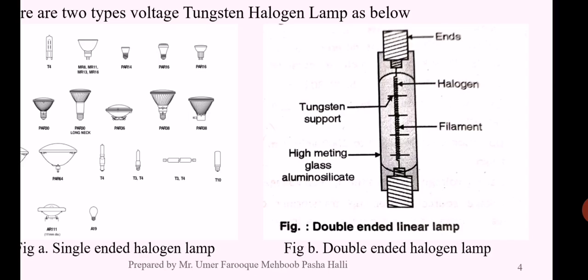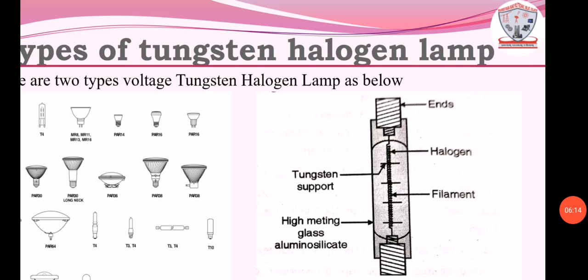The advantages of halogen lamp are: it is available in miniature size, available as single-ended or double-ended lamp, no blackening of lamp, higher lumen output up to 22 to 33 lumens per watt, high operating temperature, and longer life of about 2000 hours approximately. It is available in various sizes.